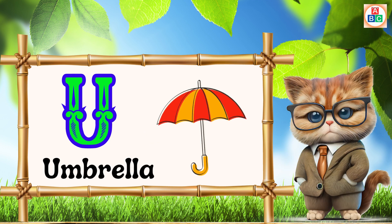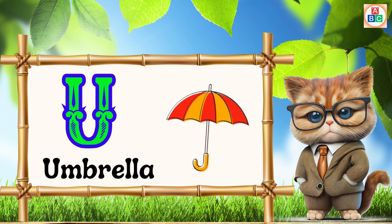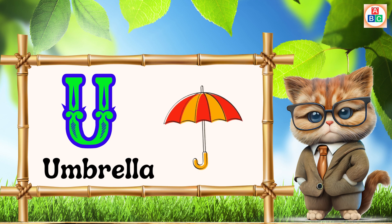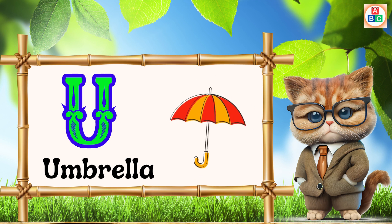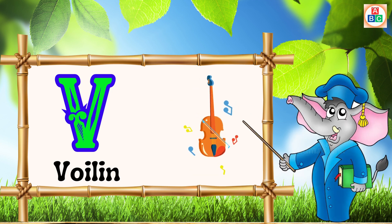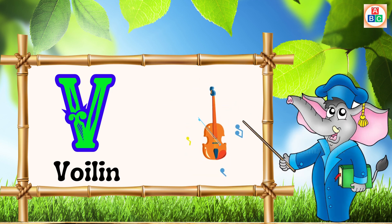U is for umbrella, u-u-u-umbrella. V is for violin, v-v-violin.